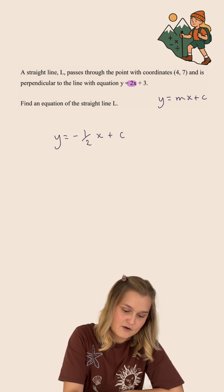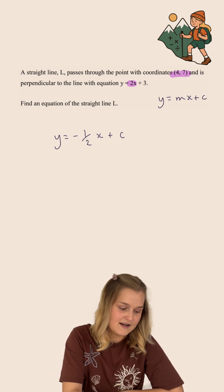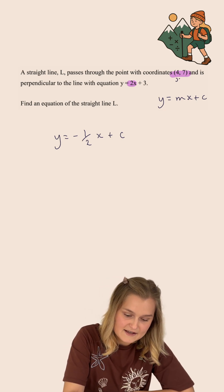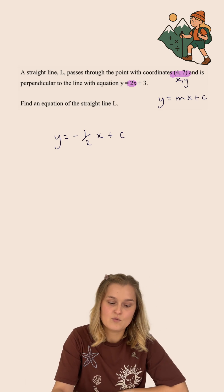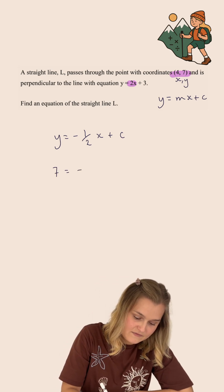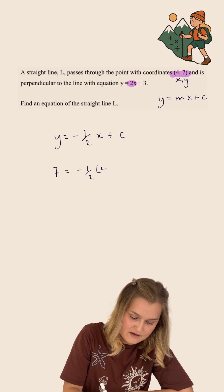Now I've been given up here a coordinate 4, 7 that lies on my line and so I'm going to substitute the coordinates into this equation that I've got. The x coordinate is 4, the y coordinate is 7 and so I'm going to replace y with 7 and I'm going to replace x with 4.